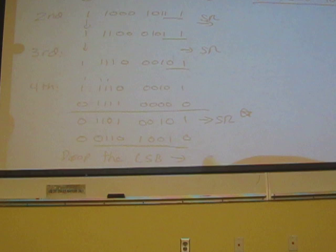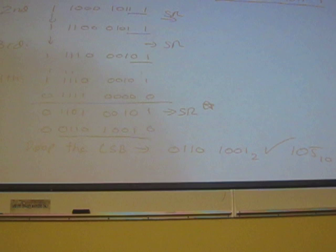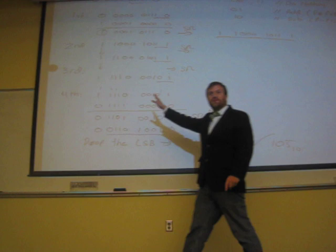And then what's the last thing that we do? We drop the least significant bit. And so our result is 0, 1, 1, 0, 1, 0, 1, 0, 1. And that is correct. That is 105 in base 10.